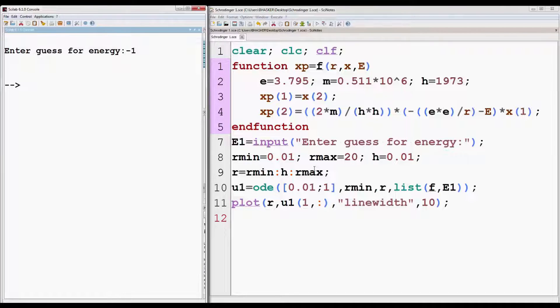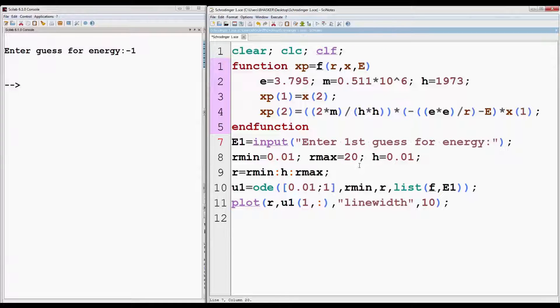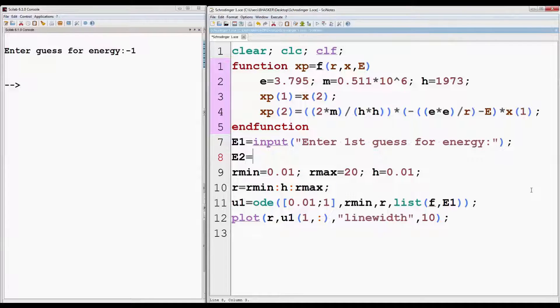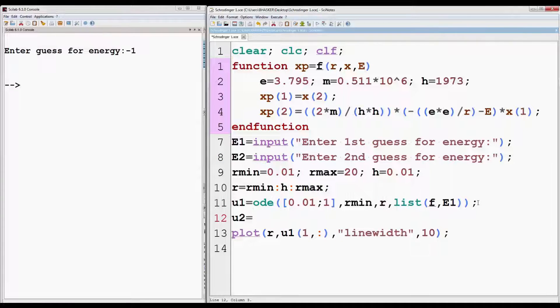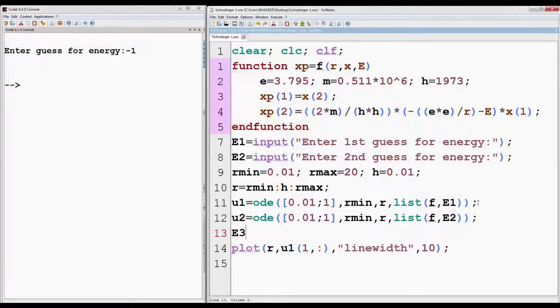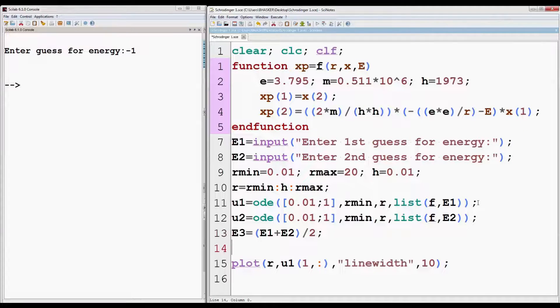Now we know the range of energy. Let's complete the program. Set E1 as the first guess and E2 as the second guess for energy. So now the program will ask for the range of energy. Solve the differential equation using ODE function with energy E2 also, and denote the result as U2. As discussed earlier we have to take the average of E1 and E2.